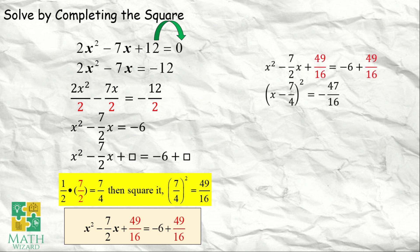Next, we write it this way: x minus 7 over 4 raised to 2 is equal to negative 47 over 16. Saan galing si 7 over 4? Si 7 over 4 ay galing pag mi-multiply natin si 7 over 2 kay 1 half, square lang natin yun. Or, ito yung factored out form ng x squared minus 7 half x plus 49 over 16. Yung x minus 7 over 4 raised to 2 is equal to negative 6 plus 49 over 16, which is negative 47 over 16.